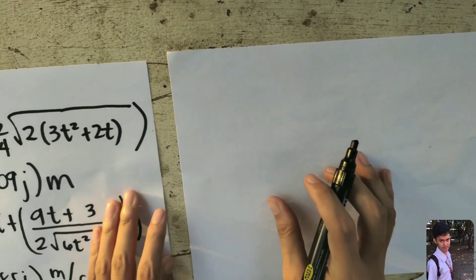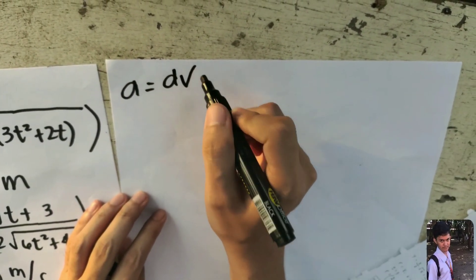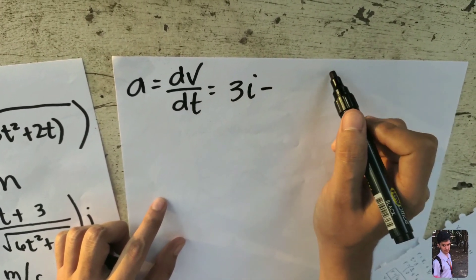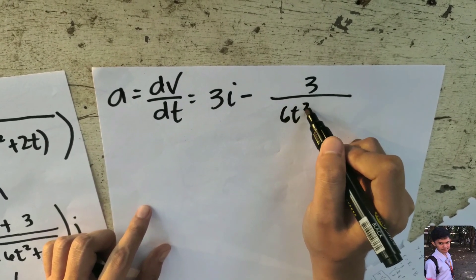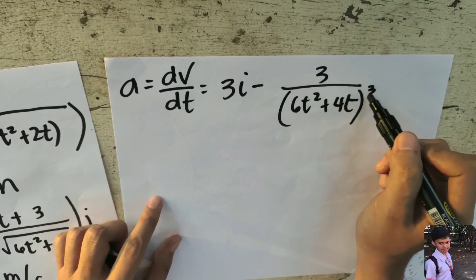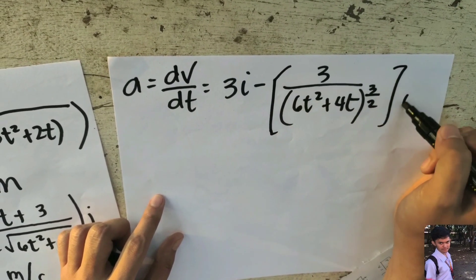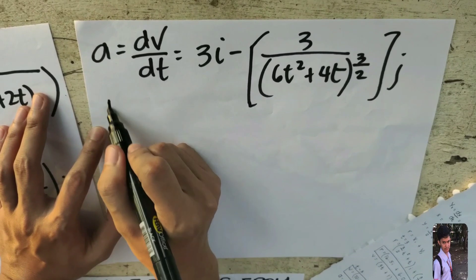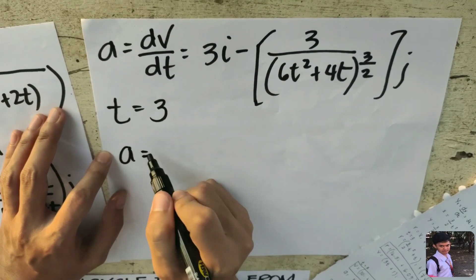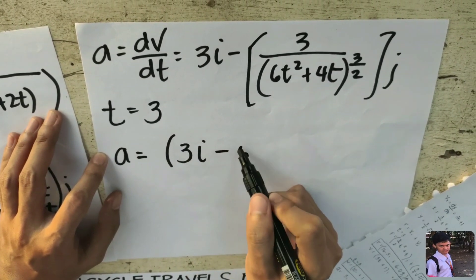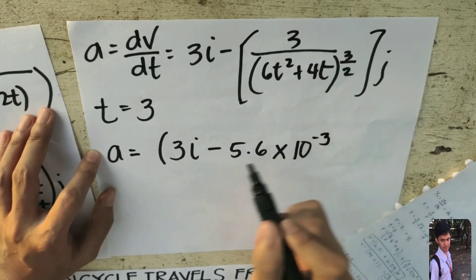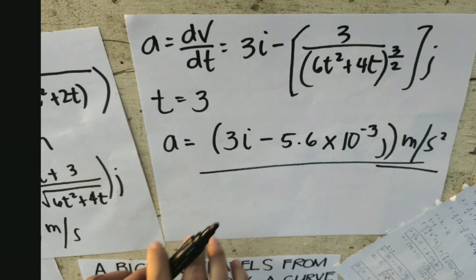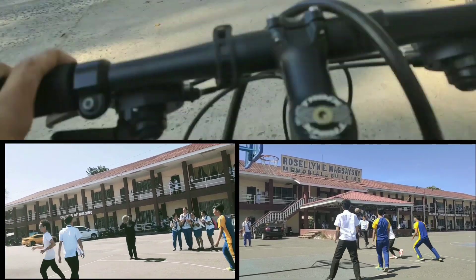Getting the acceleration where acceleration equals the derivative of velocity over time, we get 3 i minus 3 divided by (6t squared plus 4t) raised to 3/2, times all in j. Substituting the initial condition t equals 3, we get the acceleration in vector notation as 3 i minus 5.6 times 10 to the negative 3 j meter per second squared. That will be our answer for acceleration. Thank you very much.